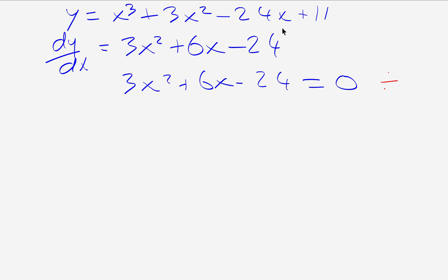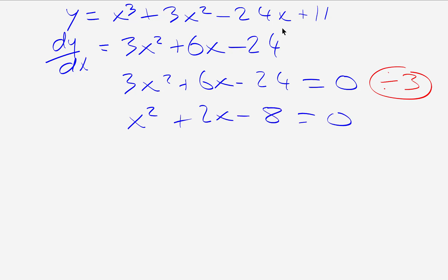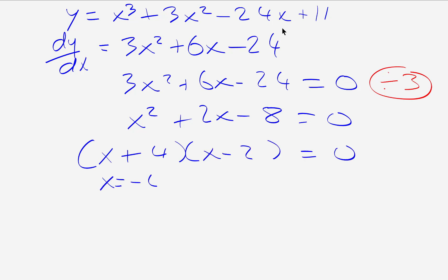To solve this quadratic, divide through by 3 to get x² + 2x − 8 = 0. Factorising gives (x + 4)(x − 2) = 0, so x = −4 and x = 2. We have two x-values for our two turning points.